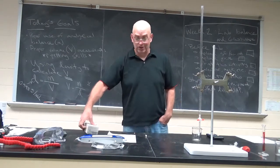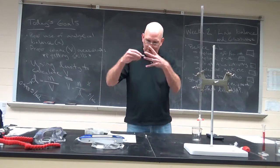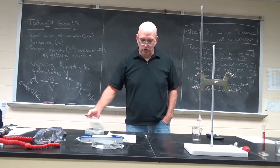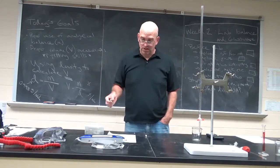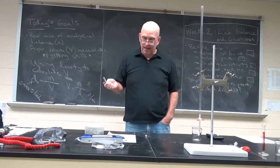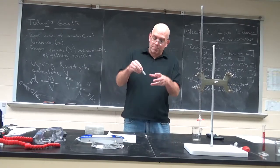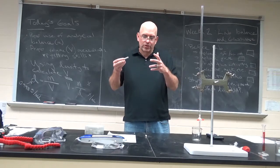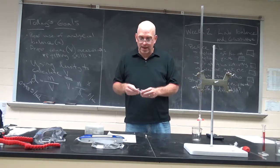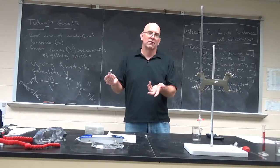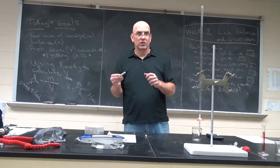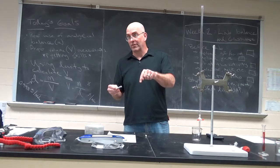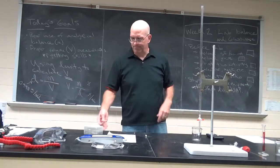All right, so just briefly, looking at the procedure, make sure you read it. The first procedure is for the balance. I think it's pretty easy. You're going to get some object. I think we're giving you a piece of aluminum. You describe it qualitatively. Take a beaker, a 50-milliliter beaker, back to the balance room. Record its mass. Put this object in there, record the mass of the beaker plus the object, and then subtract the two. That's called measuring a mass by difference.